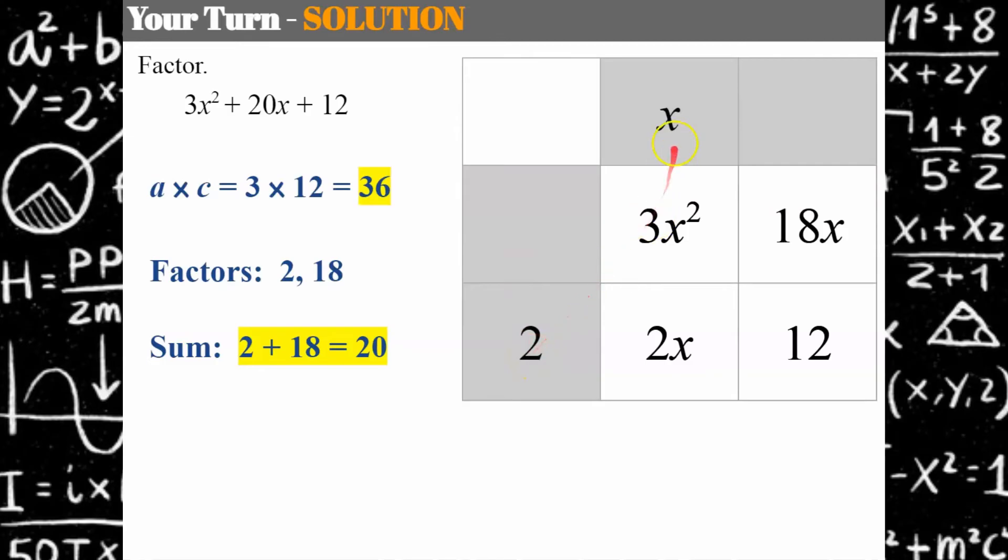2 times x is 2x, 2 times 6 is 12, and then I have to do 6 times 3x to get to 18x, which also is 3x times x is 3x². So it all works. Our answer is (3x + 2)(x + 6), and that is this trinomial completely factored.